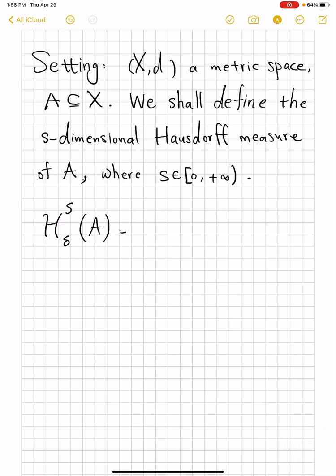So, what they are, you fix a delta positive and you define H^S_δ(A) to be the infimum of such sums diameters of E_i to power S, i from 1 to infinity,